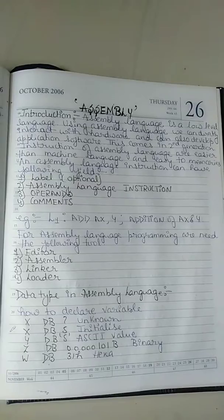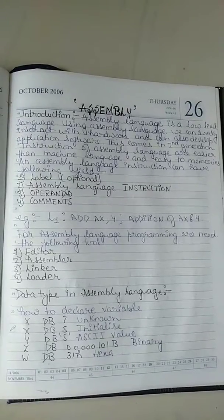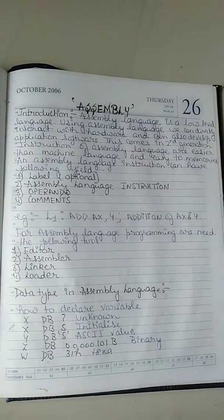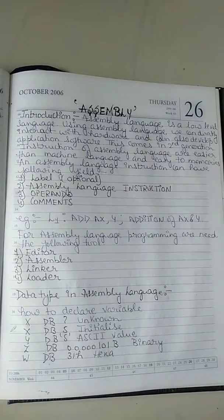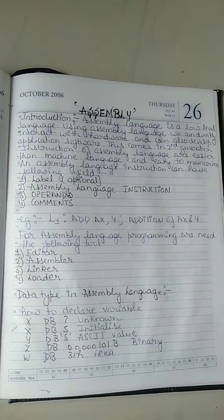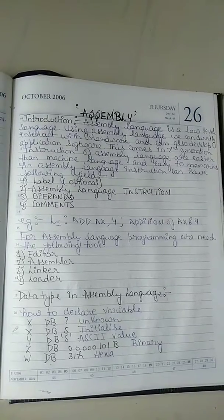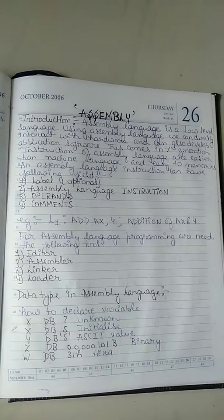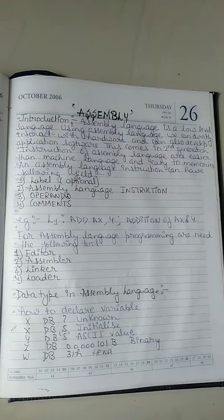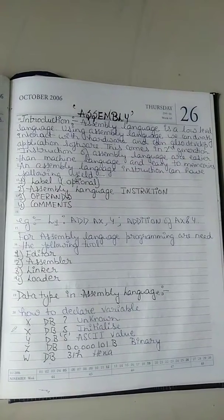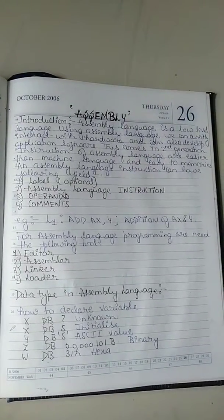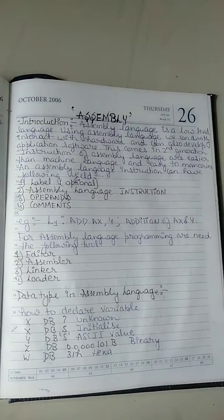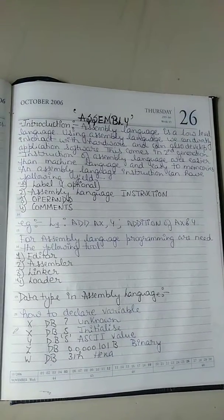Second is assembly language instructions like add, subtract, division, multiplication. Then operands — operands like AX and Y in the example given below. Then the comment, like 'addition of AX and Y'. So, L1 colon is the label, ADD is the assembly language instruction, AX and Y are the operands, and 'addition of AX and Y' is the comment.